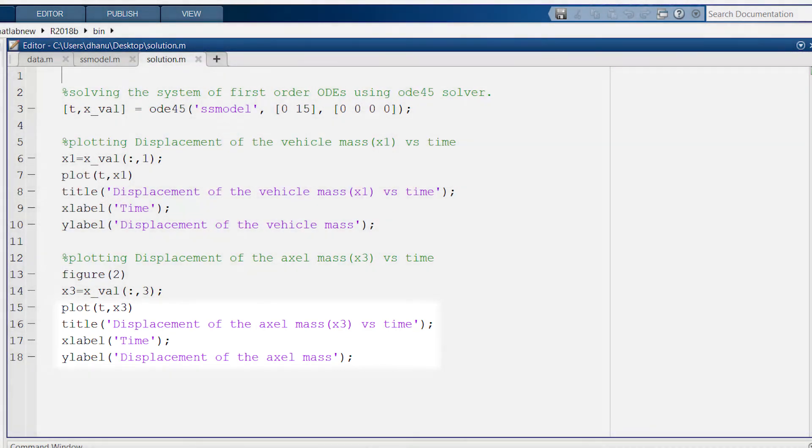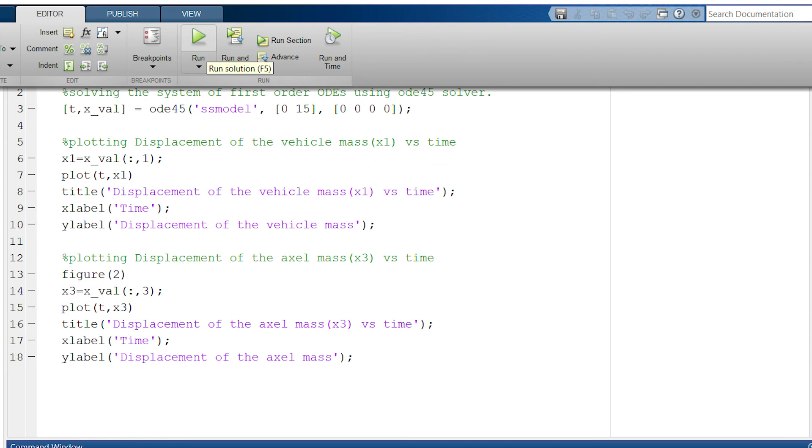Now, if I run this file, I should get two graphs. One is the displacement of the vehicle body mass versus time and the other one is the displacement of the axle mass versus time. Let's run this file.